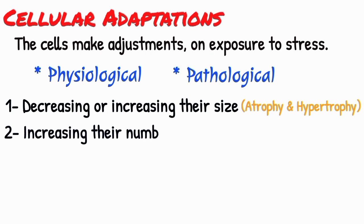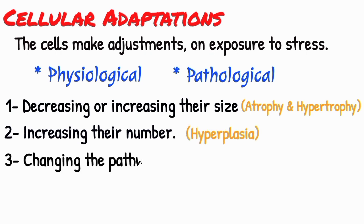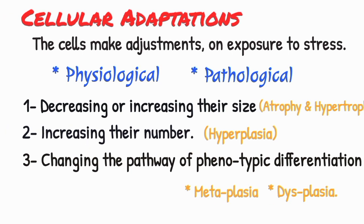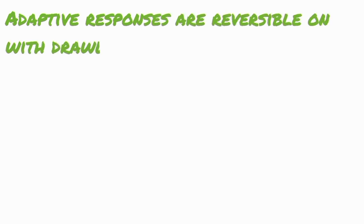Or by increasing their numbers, as occurs in hyperplasia, and by changing the pathway of phenotypic differentiation, as occurs in metaplasia and dysplasia. In general, adaptive responses are reversible on withdrawal of stimulus.